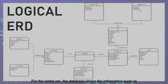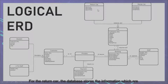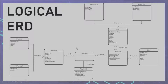Under the car entity, there are two sub-entities: rental car and return car. For the rental car, the database stores information such as pickup location, rental date, and rental time. For the return car, the database stores return location, return date, and return time.